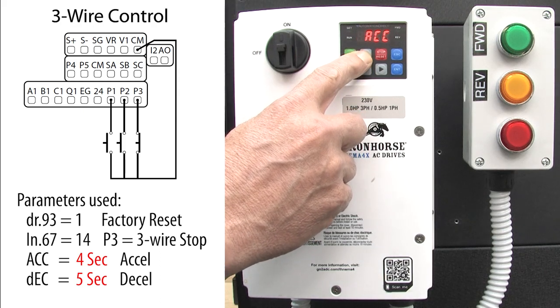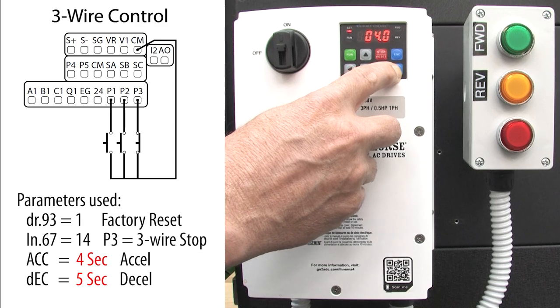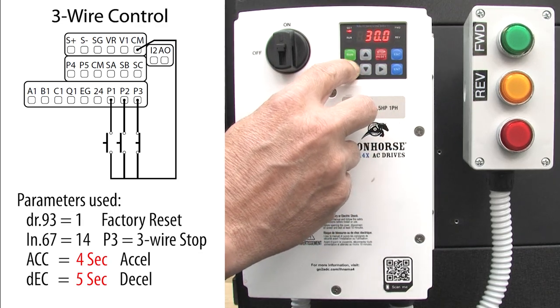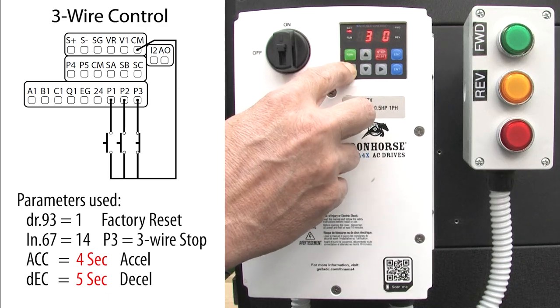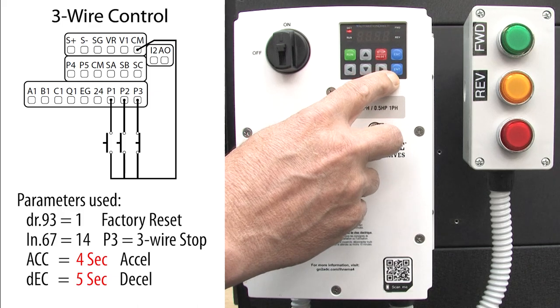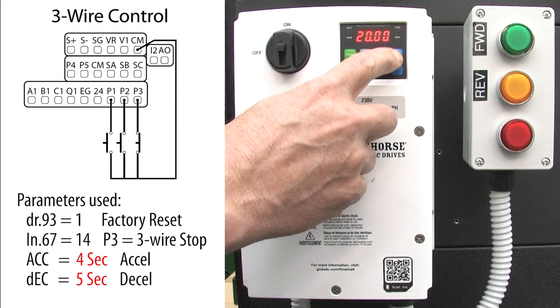Up arrow to the acceleration parameter, enter to accept, change it to something shorter. Enter to select, enter to accept. Up arrow to the deceleration, enter to select. I'll change that to something a lot shorter, enter to select and enter to accept. And escape back to the top level frequency display.